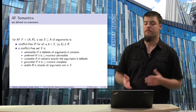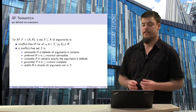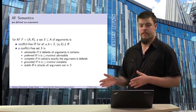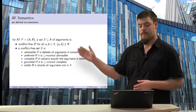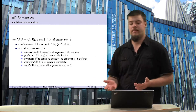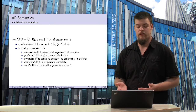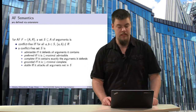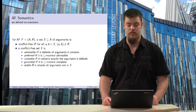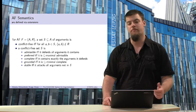For example, one is the admissible semantics, which means a set is an admissible extension if and only if it defends all arguments it contains. Another example is the complete extension, which means it contains exactly all the arguments which it defends. There are also the preferred semantics — a subset-maximal admissible extension — and the grounded semantics, which is the subset-minimal complete extension.